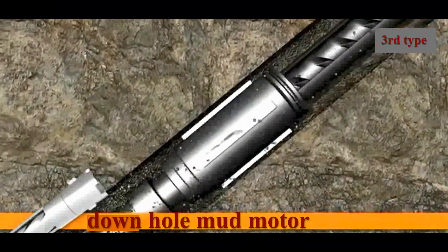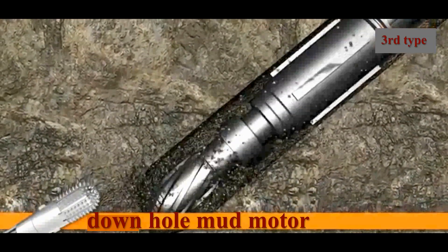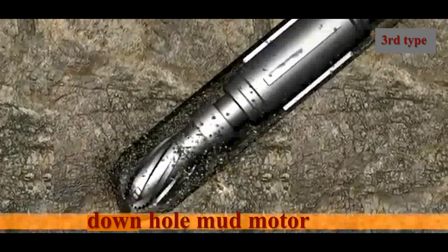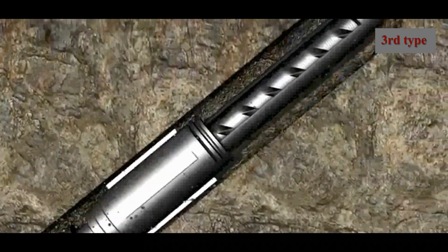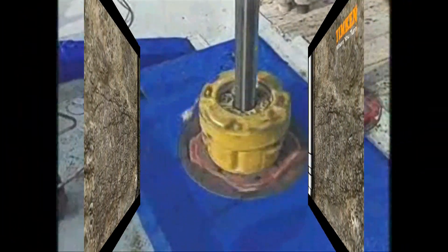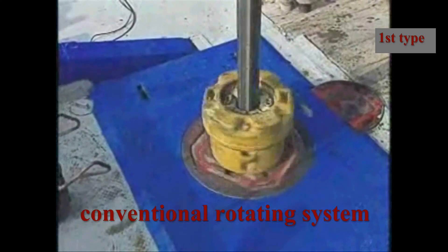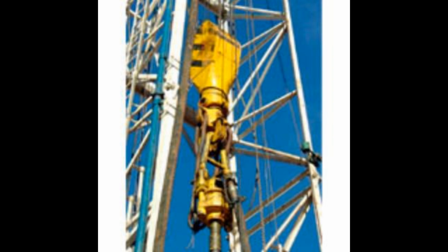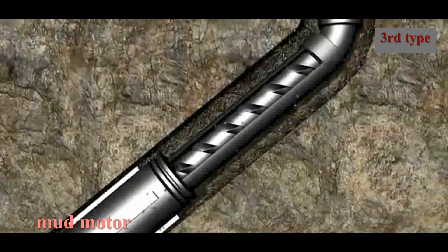The downhole mud motor is the third type of rotating system. Used in directional drilling, the mud motor is mounted directly above the bit and is powered by the drilling mud. The drilling mud turns the bit without rotating the drill string. Conventional rotating is still used on older rigs, while more modern rigs are usually equipped with top drives. All rigs engaging in directional or horizontal drilling use the mud motor.